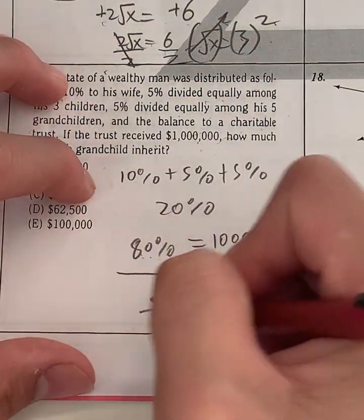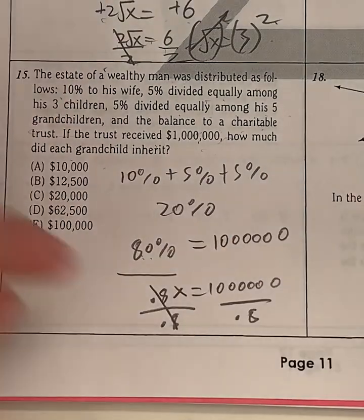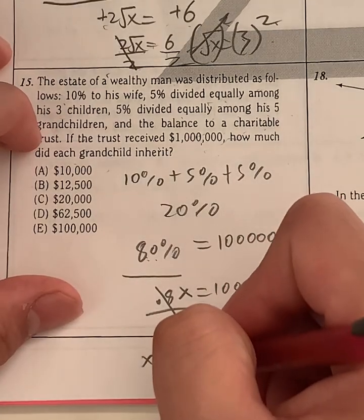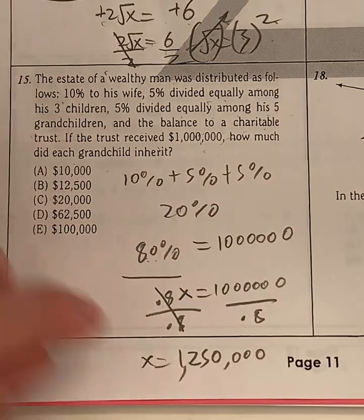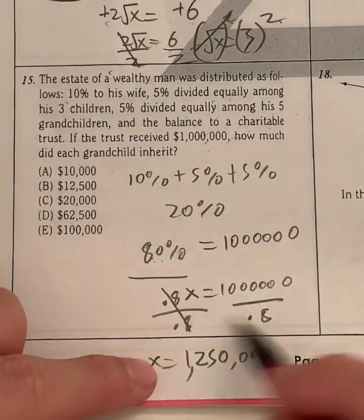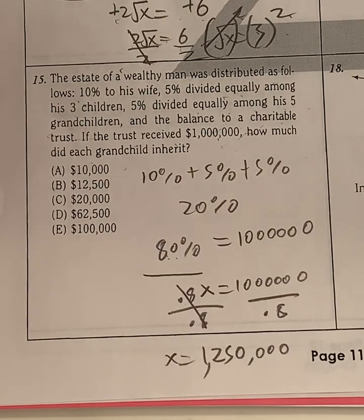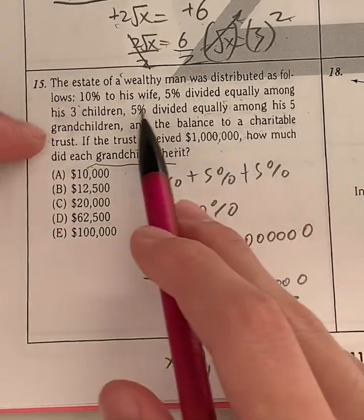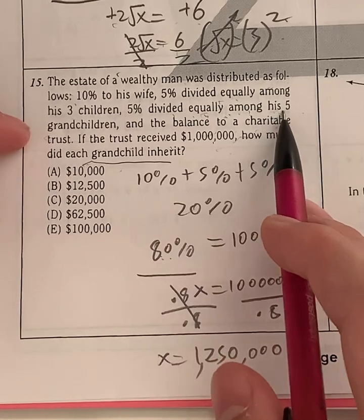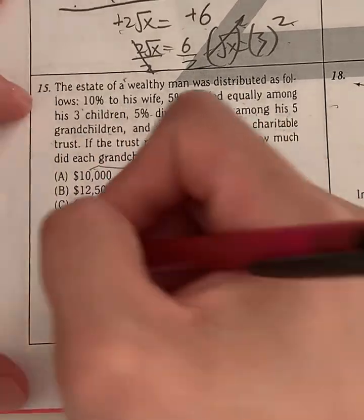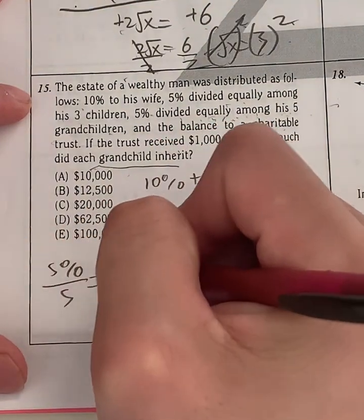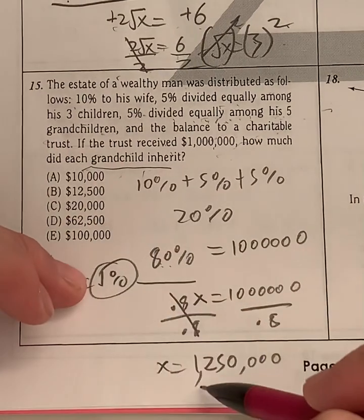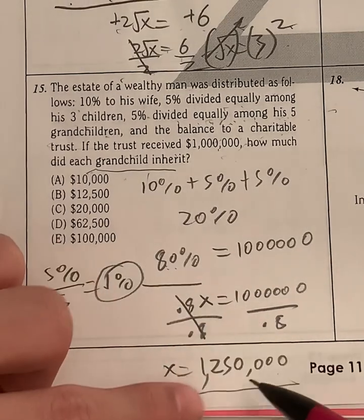Now if you use a calculator to find x, we can just divide both sides by 0.8 to cancel out. Give you x equals $1 million divided by 0.8, which should give you $1.25 million. So it should look like this: $1,250,000. So that's the value of the total amount of money this wealthy man has. So the question asked for how much did each grandchild inherit?